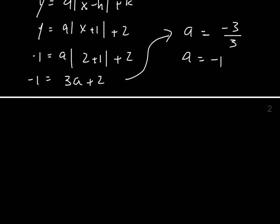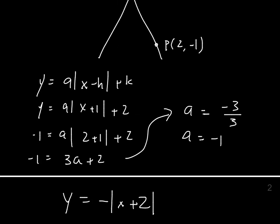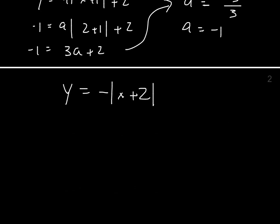That means your equation is y equals negative x plus 2. Or was it plus 2? No, it was plus 1. Plus 2. And that's the final equation of your absolute value function, given the vertex and a point.